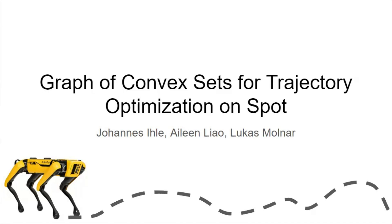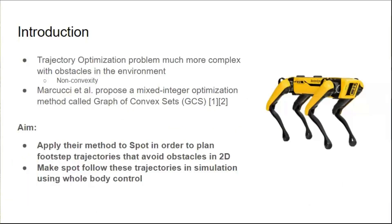We worked on Graph of Convex Sets for trajectory optimization on Spot. The trajectory optimization problem is much more complex with obstacles in the environment due to non-convexity. Marchetti et al. proposed a mixed integer optimization method called Graph of Convex Sets, which they use for trajectory optimization. Our project aims to apply their method to Spot in order to plan footstep trajectories that avoid obstacles in 2D.